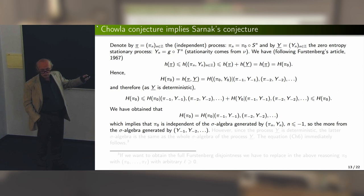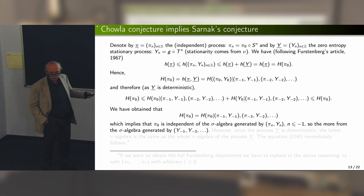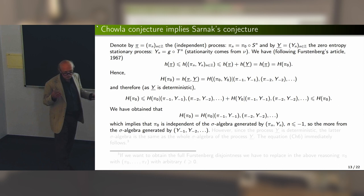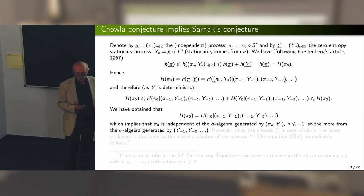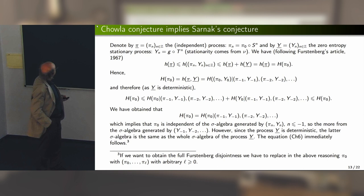If conditioning didn't reduce the entropy, the only possibility is that the events are independent. This means pi_0 is independent with respect to the past of the double process (pi, Y). In particular, pi_0 is independent of the past of the process Y. But the past of Y determines everything — we are in a deterministic process — so we prove that pi_0 is independent of the sigma-algebra generated by Y. That is the end of the proof.